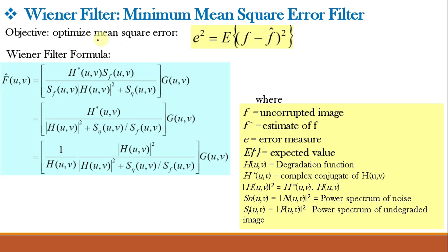For the Wiener filter, our objective is to minimize the mean square error between the undegraded image F and the estimated image F̂, so the error squared — the expected value of (F minus F̂) squared — should be minimized. For designing the Wiener filter we take three assumptions: (1) the noise and image are uncorrelated; (2) either the blur H or the noise has zero mean; and (3) the gray levels in the estimate are linear functions of the degraded image.